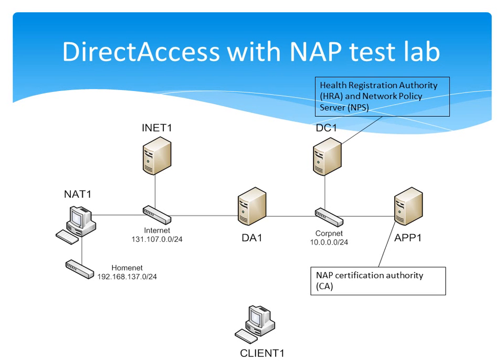We're going to configure DC1 as the health registration authority, or HRA, and network policy server, or NPS. The HRA is essentially a website that NAP clients contact to submit their system health information. The HRA receives that information and sends it to the network policy server service for evaluation. The NPS service evaluates that information against a series of network and system health policies and determines whether the NAP client is compliant or non-compliant. If compliant, it instructs the HRA to contact the NAP CA and obtain a health certificate on the NAP client's behalf.